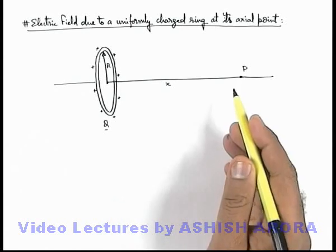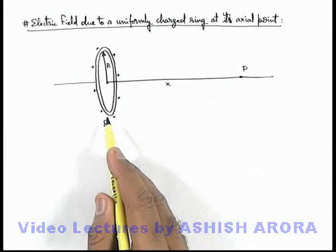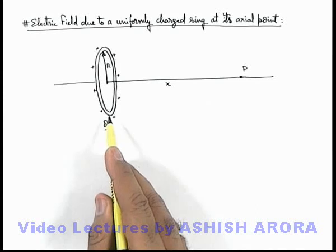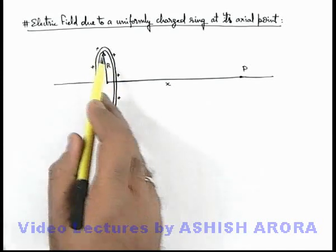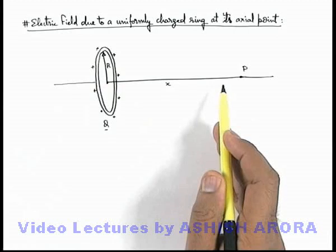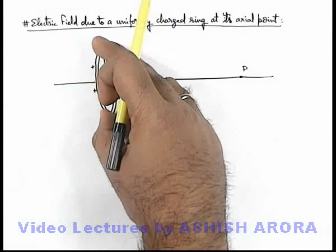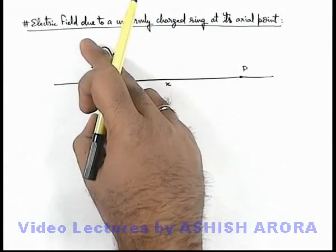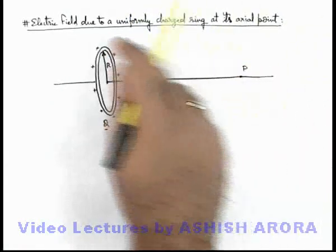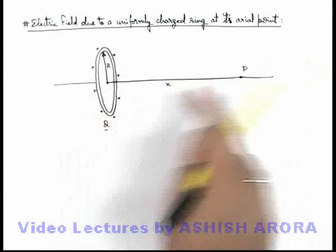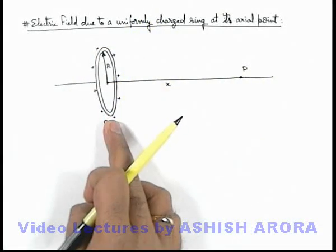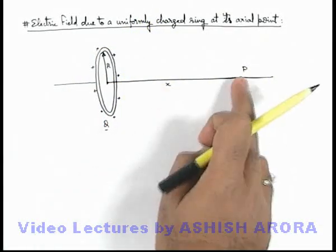As we know, due to a positive charge the electric field is directed away from it. So due to this whole ring, the electric field directions exist in such a manner that all these electric field vectors are on the surface of a cone, with the base lying at the ring and the vertex at point p.